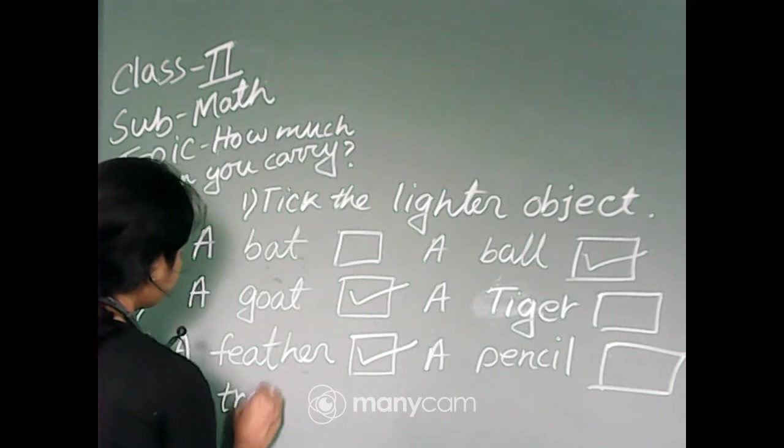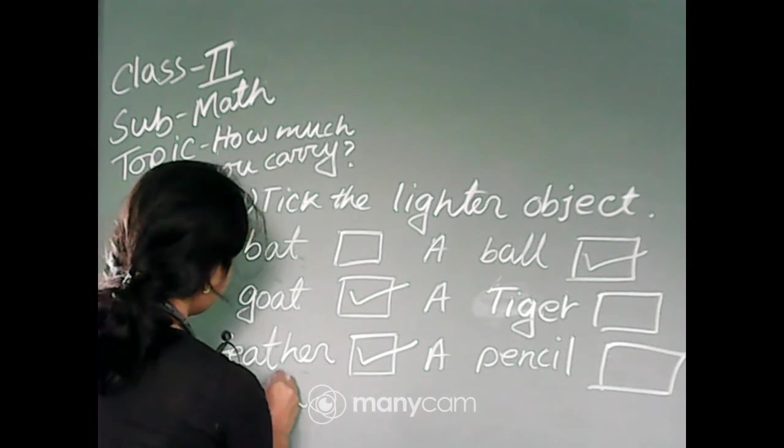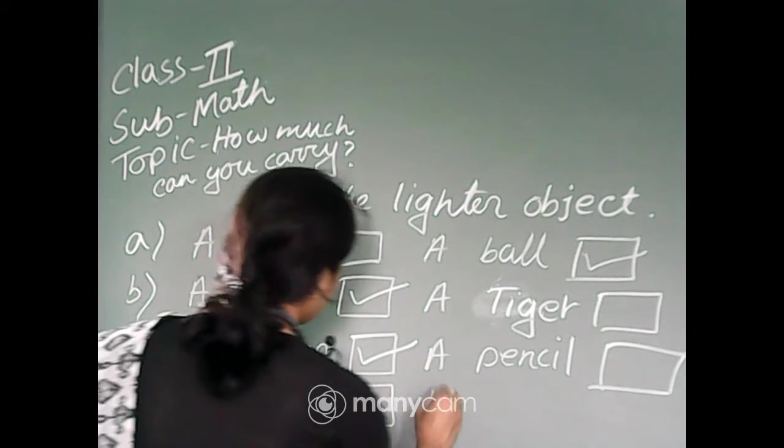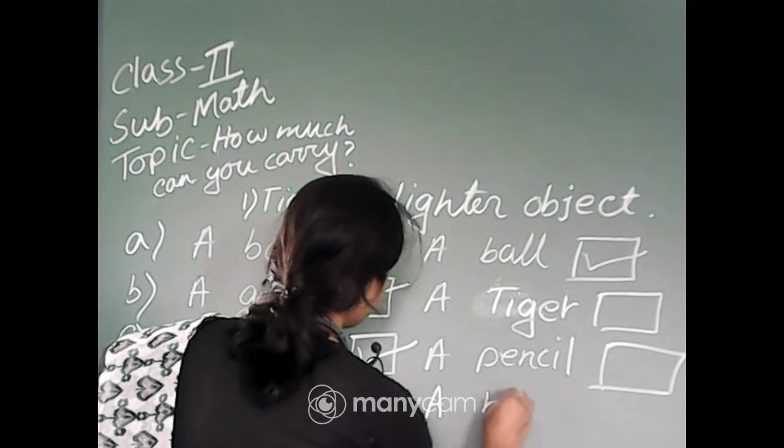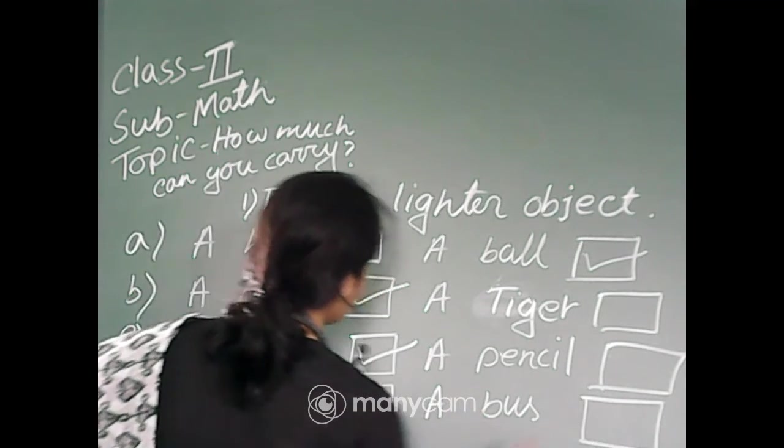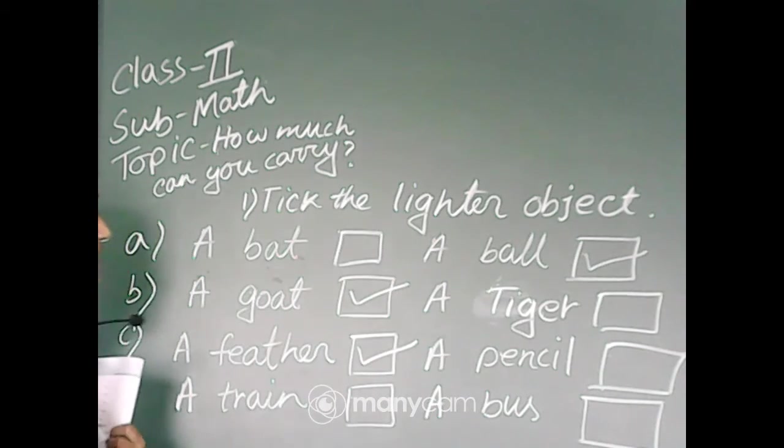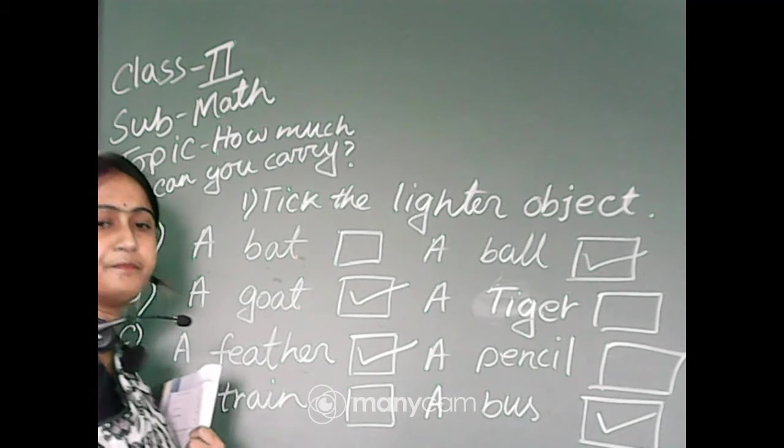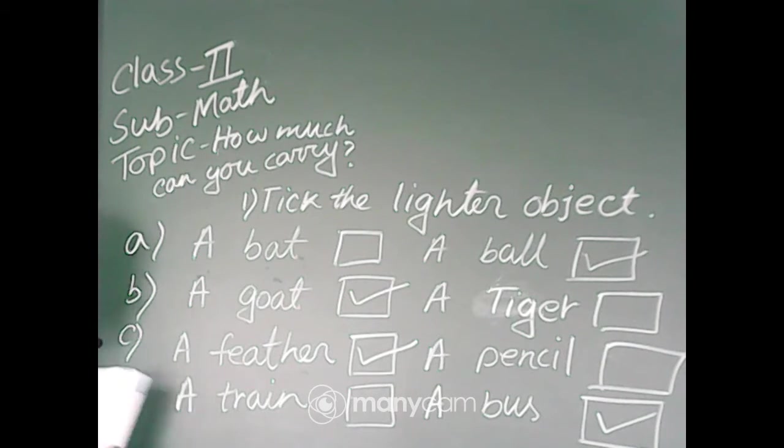Number D: a train or a bash. Which is lighter? Bash or train? Lighter, tick the lighter object. Bash, so tick bash. Okay, done.